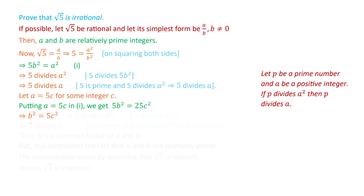We have b squared equals 5c squared, and the term 5c squared is divisible by 5. So b squared is divisible by 5, meaning 5 divides b squared. Since 5 is a prime number and 5 divides b squared, by the lemma this implies that 5 divides b.